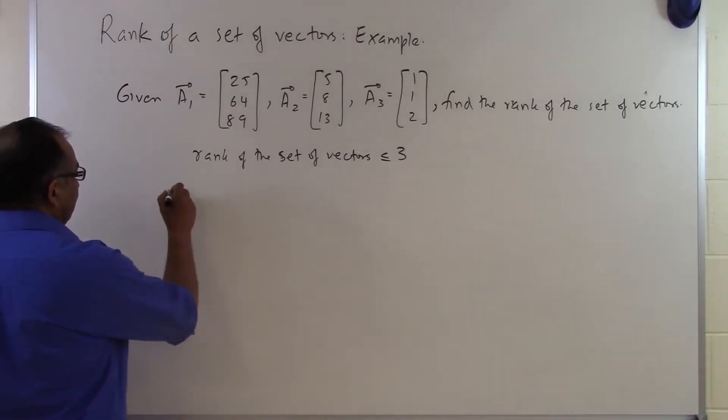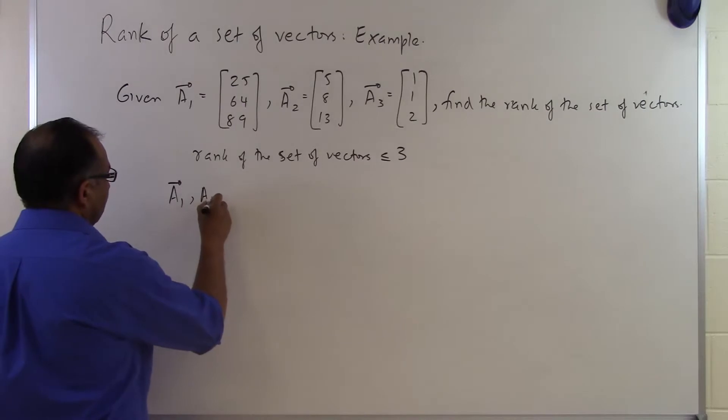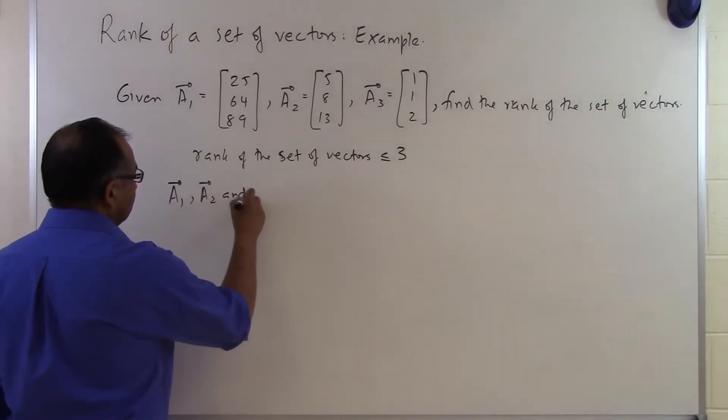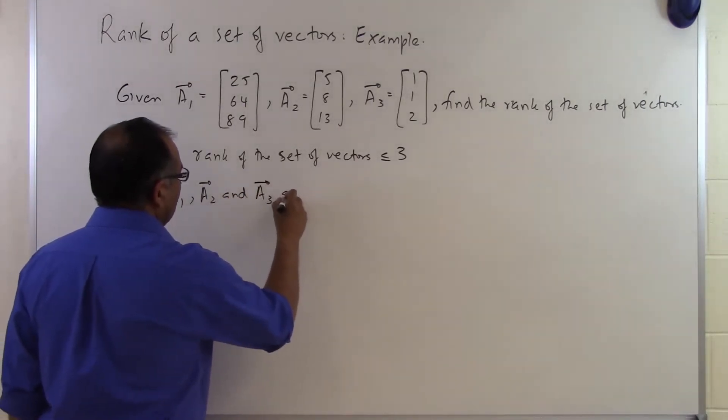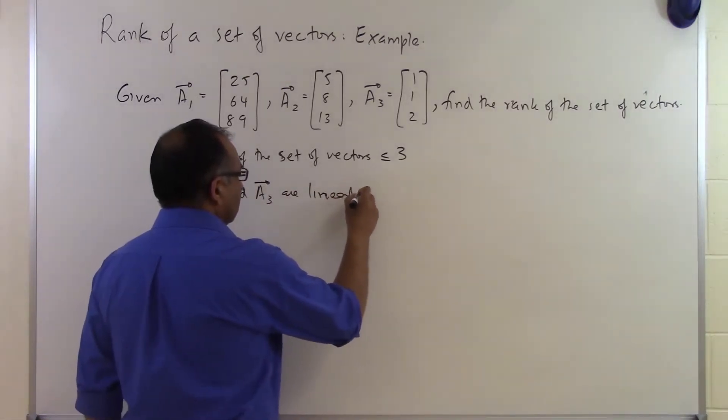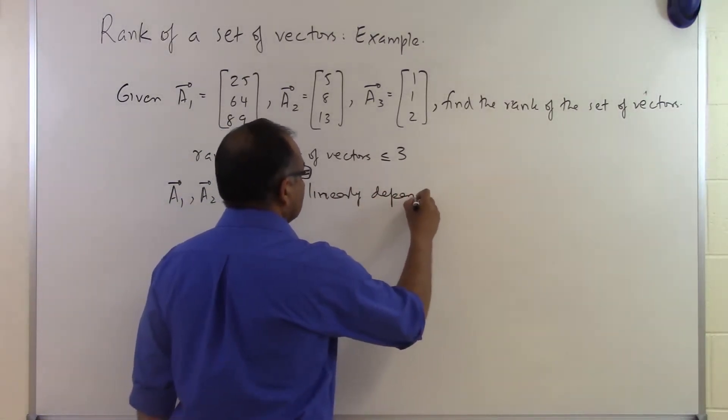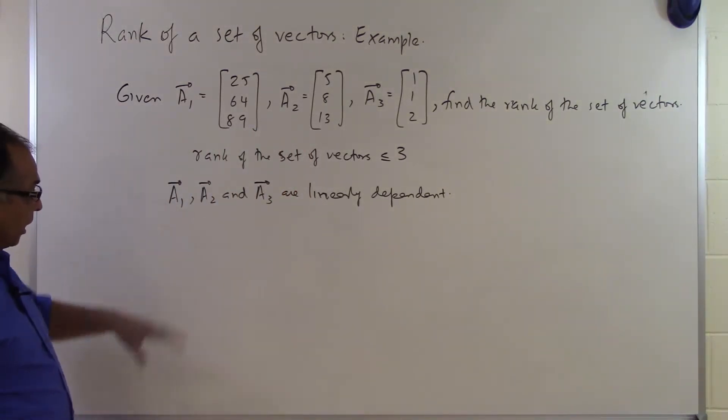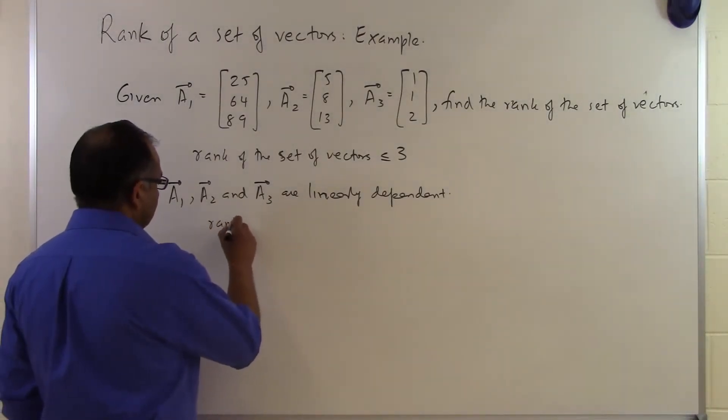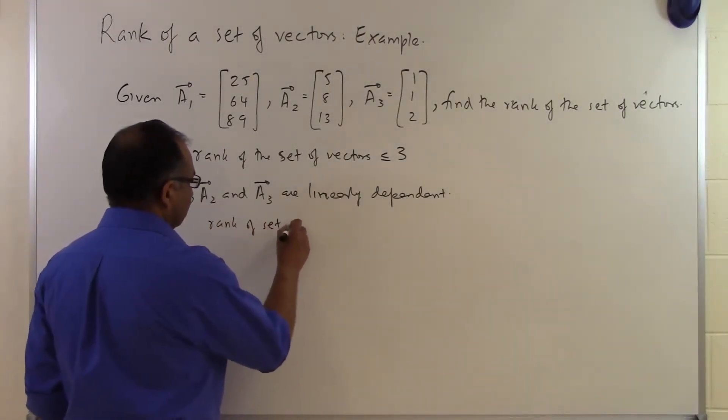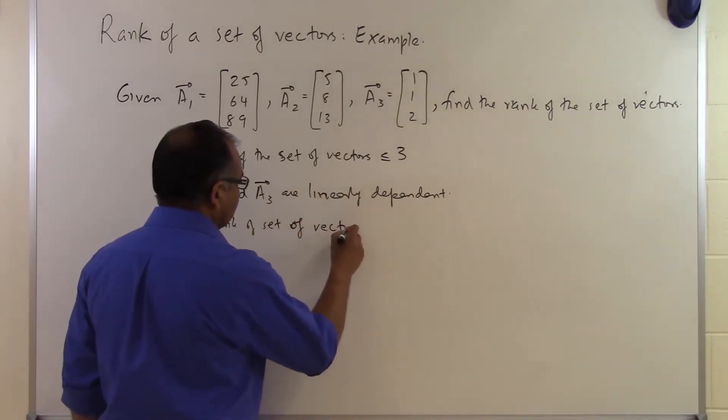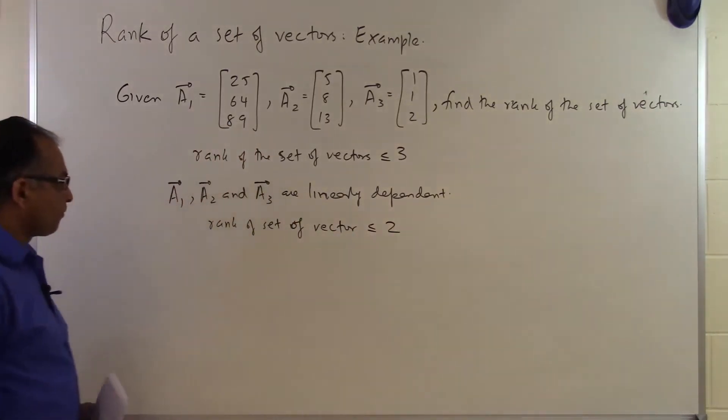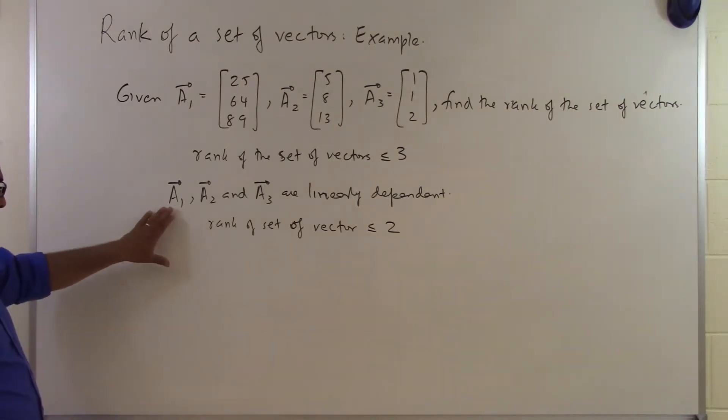We already know from a previous example that A1, A2, and A3 are linearly dependent. So that means that the rank of the set of vectors is going to be less than or equal to 2, because it cannot be 3 since you don't have 3 vectors which are linearly independent.